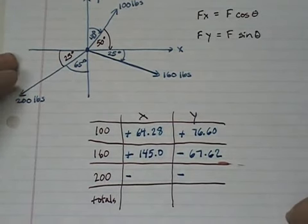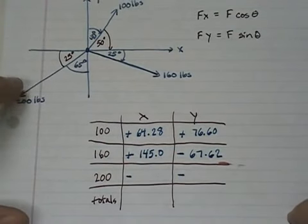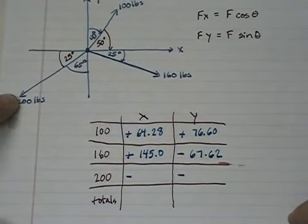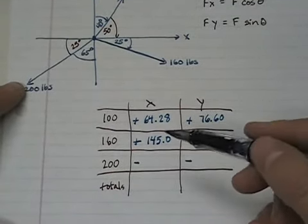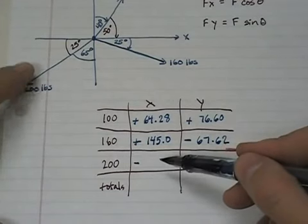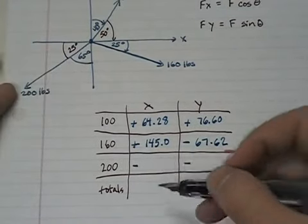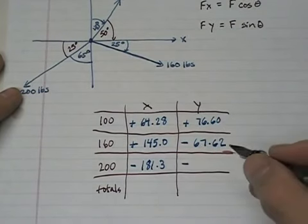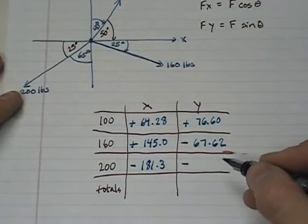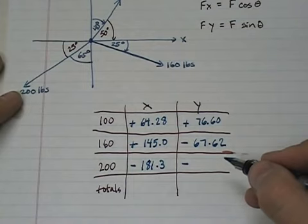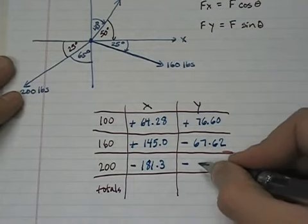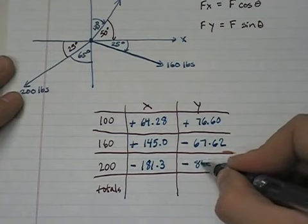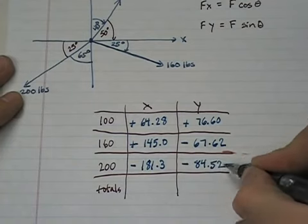And last but not least will be our 200 pound force. And our 200 pound force is going to be 200 cosine of 25. That is negative 181.3. And it will be 200 times the sine of 25, which is negative 84.52.